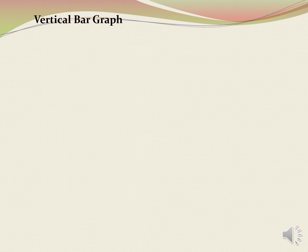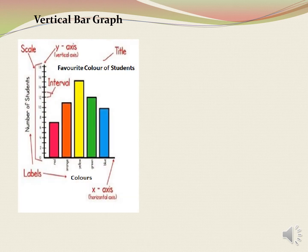There are two types of bar graphs. First, vertical bar graph. In this bar graph, the bars are in vertical position, that is standing position. On the x-axis you can see the names of the colours and on y-axis you can see the number of students.